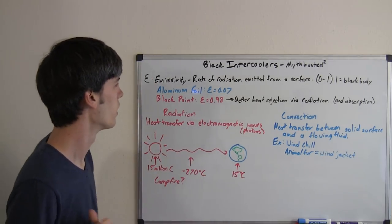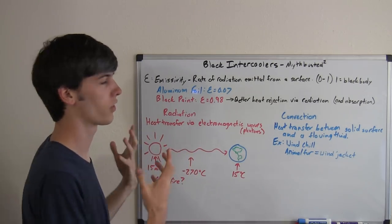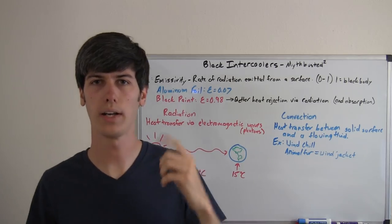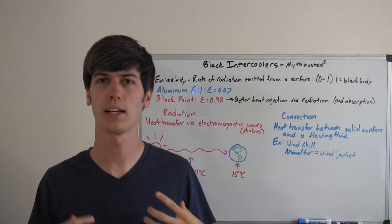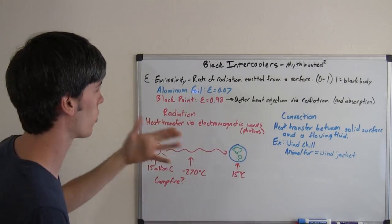It all comes down to emissivity. So emissivity is the rate of radiation emitted from a surface. It's on a scale of zero to one. So a black body has an emissivity of one, meaning that it rejects the highest amount of heat via radiation. Something that has a zero would be the lowest amount.